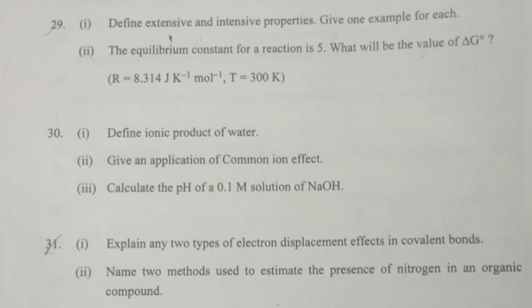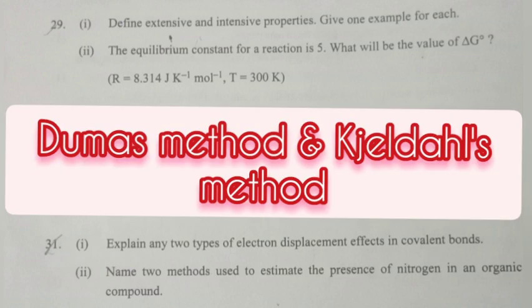Question 2: Name two methods used to estimate the presence of nitrogen in an organic compound. Answer: Dumas method and Kjeldahl method.